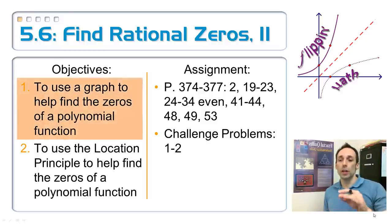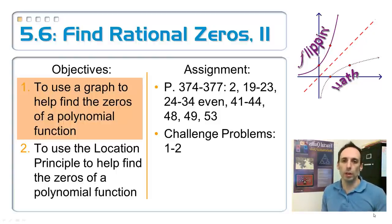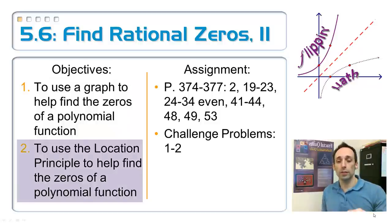So the first objective is using a graph to help us find some zeros of a polynomial function. It's kind of weird because I want to find zeros so that I can graph the function. But here we're using the graph to find the zeros. It's a little backwards. The second objective is using what's called the location principle to help us find some of those zeros.